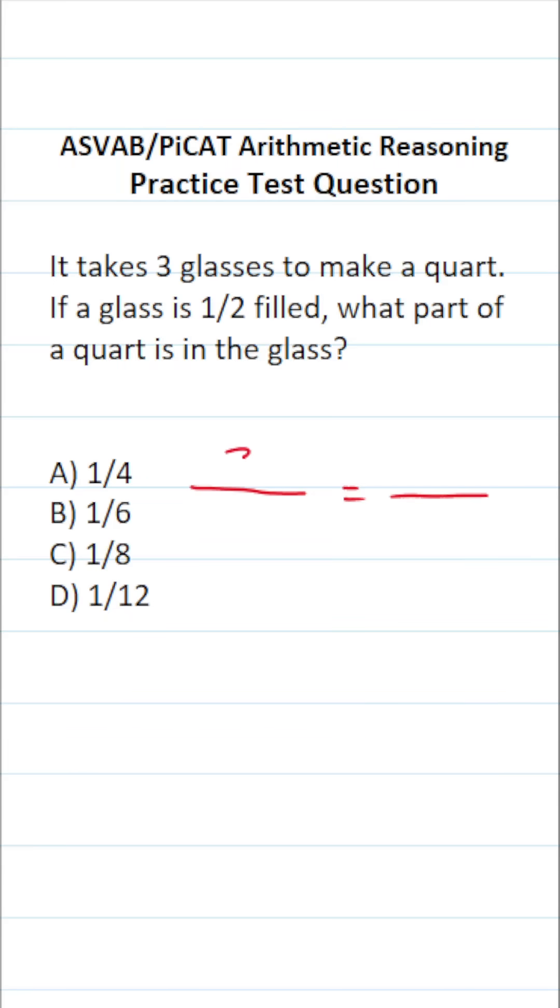In this case, we know that three glasses make one quart. And the way I filled in this proportion is like this: glasses in the numerator over quarts in the denominator.